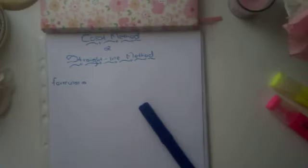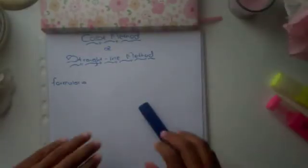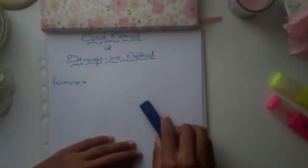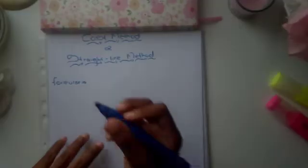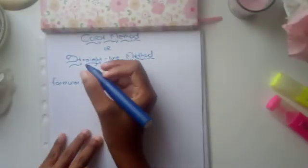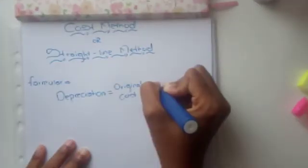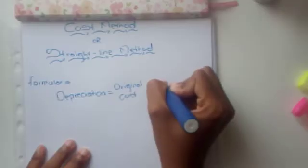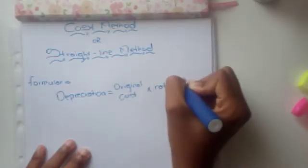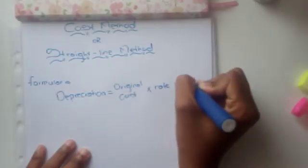Let's get started with the first method, which is the cost method, also known as the straight line method. This method is where you calculate depreciation on cost. The formula is: Depreciation = Original Cost × Rate × (m/12).